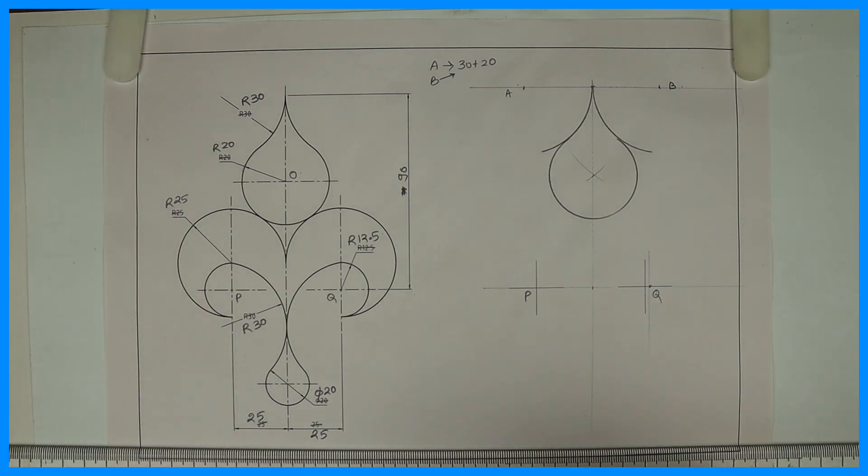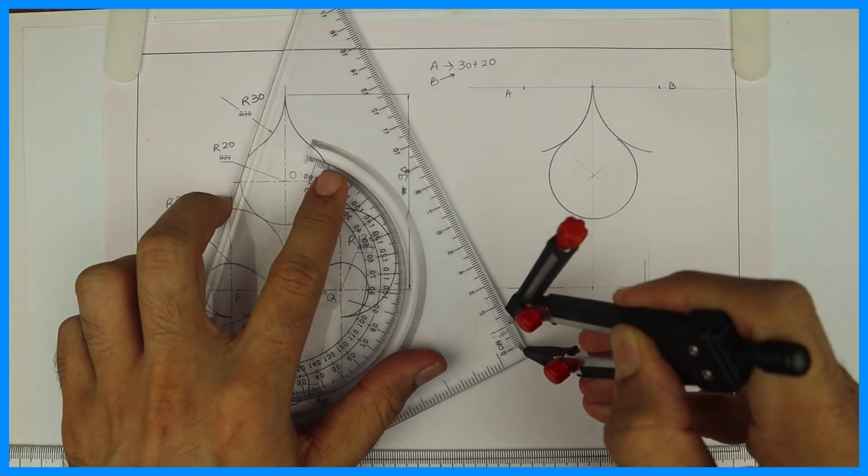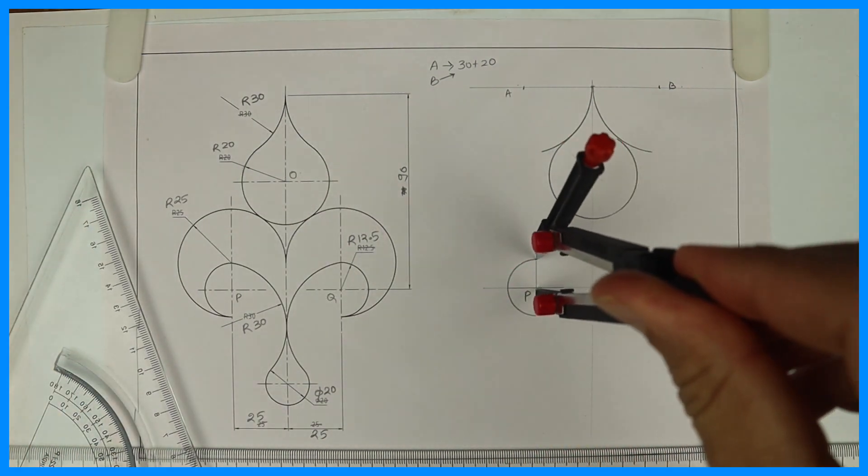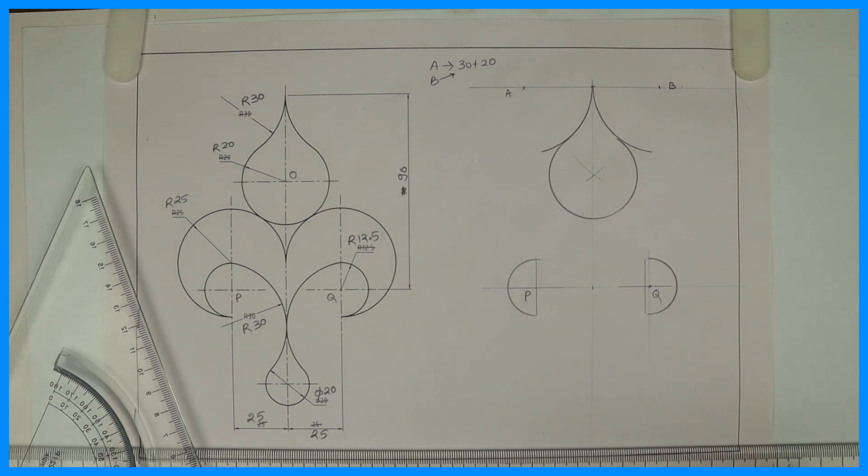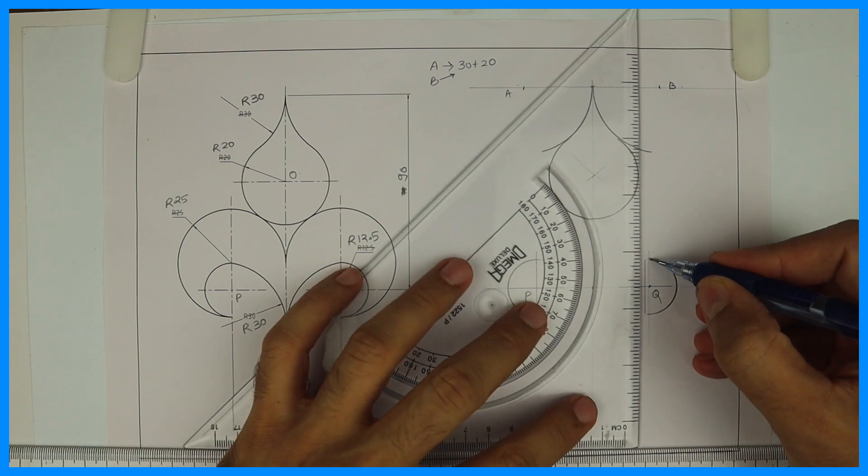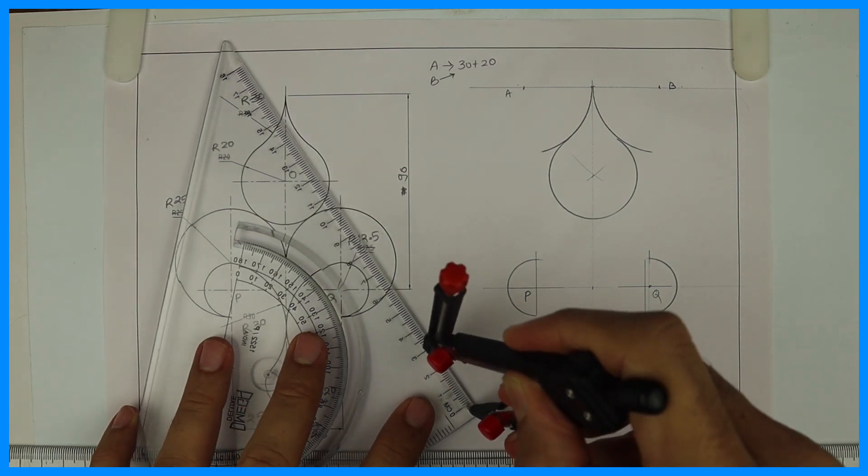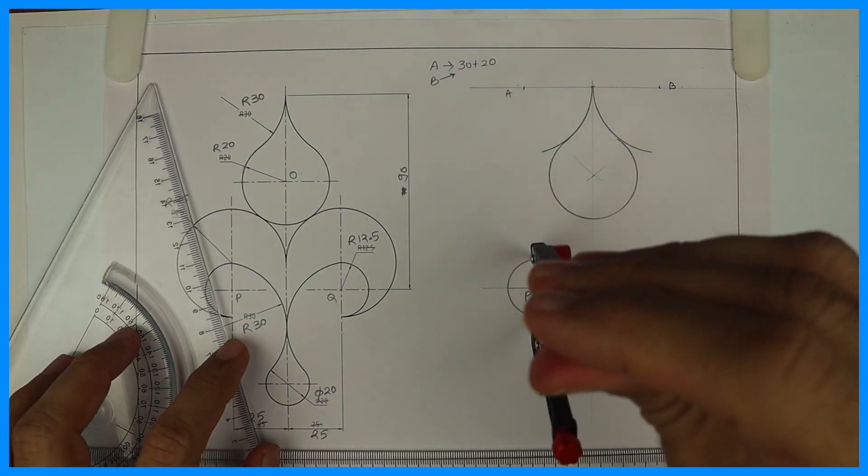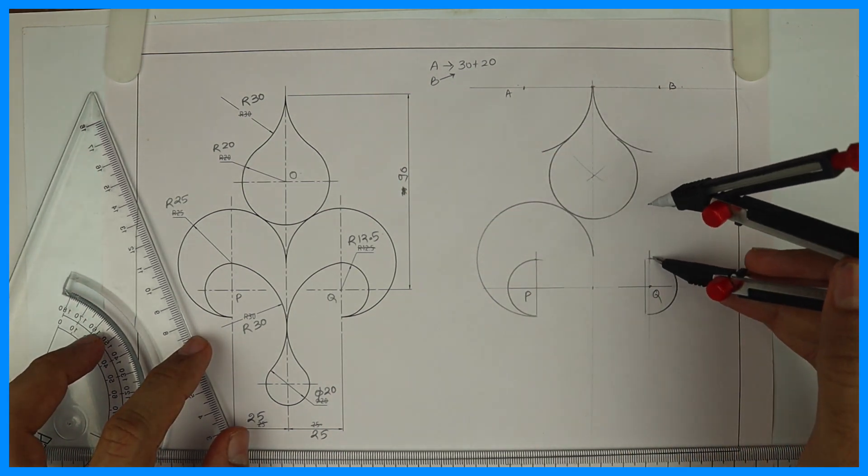After that we'll see this point P and Q. From P we need to draw radius 12.5, so I will take radius 12.5 and I'll cut it from P as well as from Q. Then they've given radius 25. So I will take 12.5 and from here I'll cut 12.5, and from here also cut 12.5.